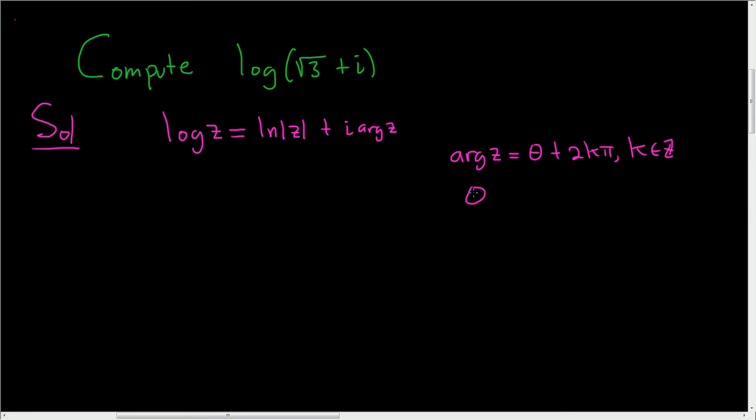And theta is a specific value of arg z. It's the angle that lives in the interval negative pi to pi. And this will be our principal branch.